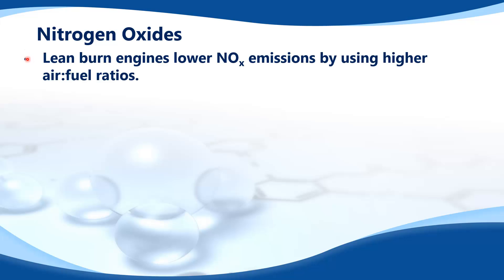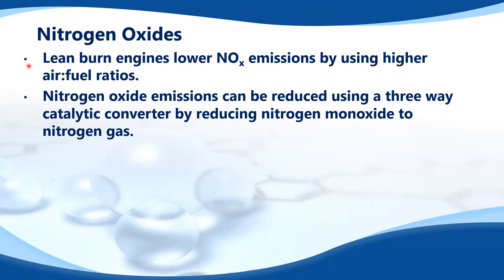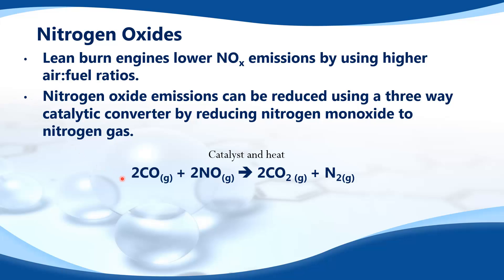Nitrogen oxides. Lean burn engines lower nitrogen oxide emissions by using higher air to fuel ratios. Nitrogen oxide emissions can be reduced using a three-way catalytic converter by reducing nitrogen monoxide to nitrogen gas. Here's the reaction that occurs in a three-way catalytic converter: carbon monoxide reacts with nitrogen monoxide in the presence of a catalyst and heat to produce carbon dioxide and nitrogen gas.